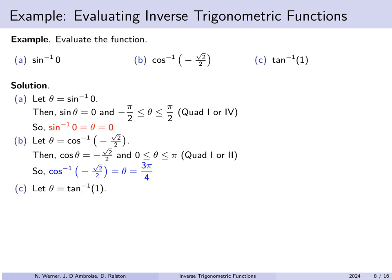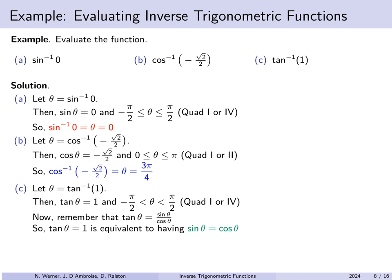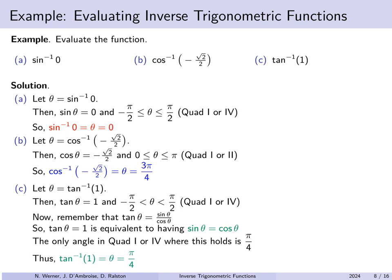For part c, let theta be the arc tangent of 1. Its tangent is 1 and it's between negative and positive pi over 2. Remember, tan theta is sine over cosine, so tan theta equaling 1 is equivalent to sine theta equaling cos theta. What's an angle between negative and positive pi over 2 where sine and cosine are equal? The only such angle is pi over 4. So the arc tangent of 1 is pi over 4. These standard reference angles should become second nature to you.